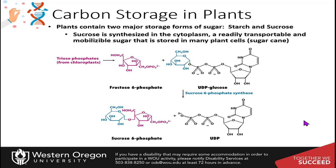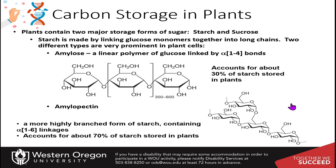To conclude, we'll review carbon storage in plants, similar to carbon storage in the liver in the form of glycogen. Plants can make sucrose from fructose combined with a UDP-glucose molecule; the UDP acts as a good leaving group, joining fructose and glucose together to form sucrose-6-phosphate. Plants like sugarcane can store this molecule. Sucrose is one major form of sugar in plants, and starch is the other.